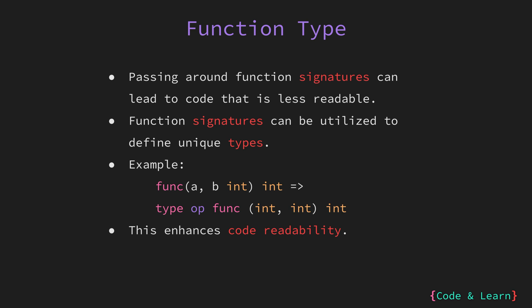Just to revise: as we have seen in previous lessons, int, arrays, and slices are different types. We also looked at struct, which is a custom type. Here we are defining another custom type op, which is of type function that accepts two input values and returns a single int value.